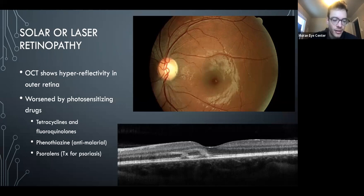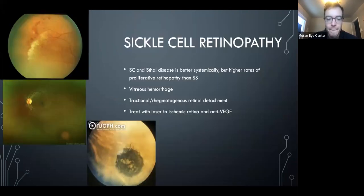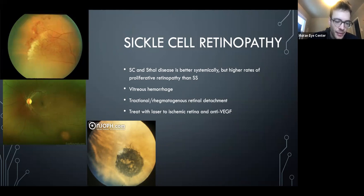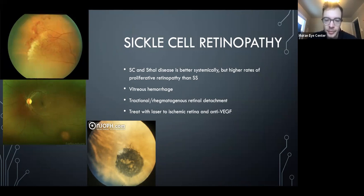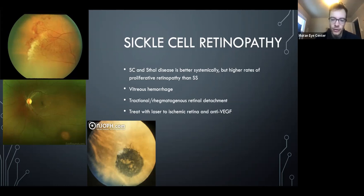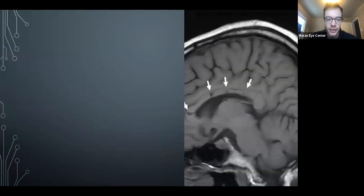Sickle cell retinopathy: you can see the sea-fan configuration, salmon patches (older hemorrhage), and black sunbursts (dead RPE from ischemia). Unlike systemic disease where SS is worst, SC and S-thal are actually worst for retinopathy. Treatment includes laser, sometimes anti-VEGF.